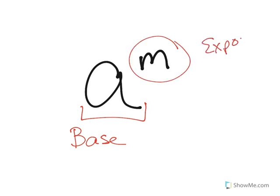This is a to the m. Thinking about this a, this is any number. But this is called the base of the exponent. And here, this is the exponent itself.